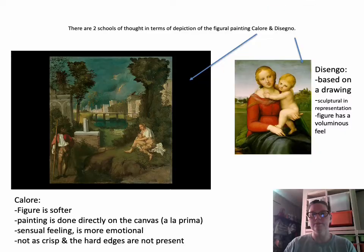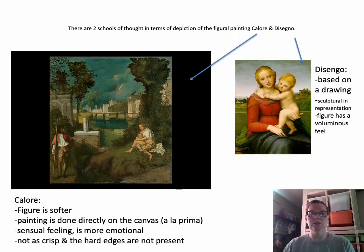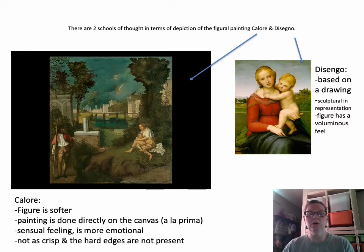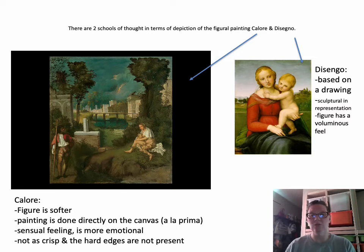There are two schools of thought in terms of depiction in High Renaissance work. The first is called colore, the second is called disegno. For now, know that Michelangelo, Leonardo, and Raphael all work in the disegno style — this is where the painting is based on a drawing and it tends to be somewhat sculptural.